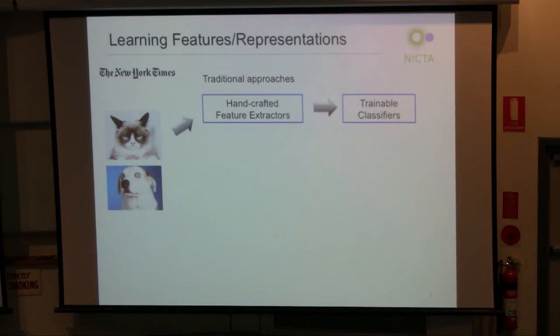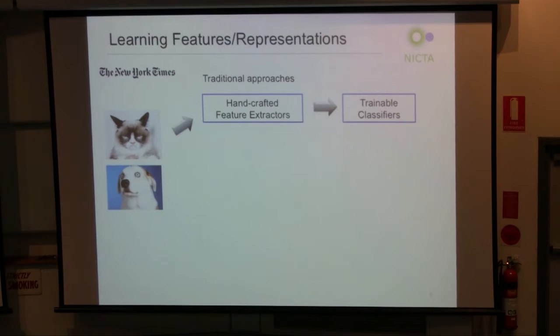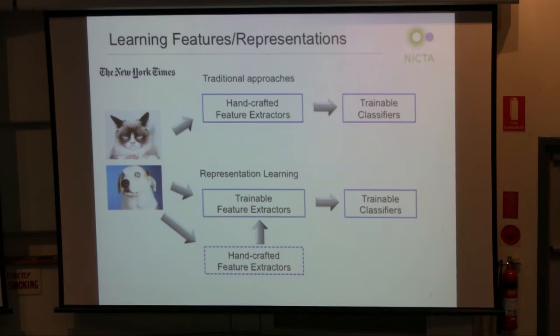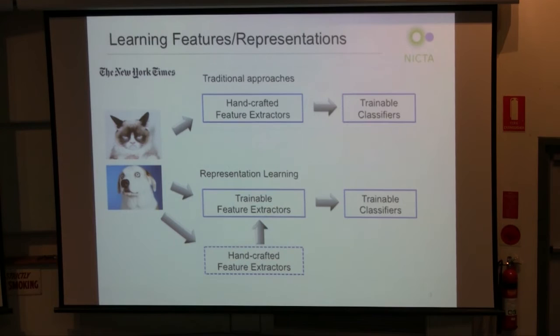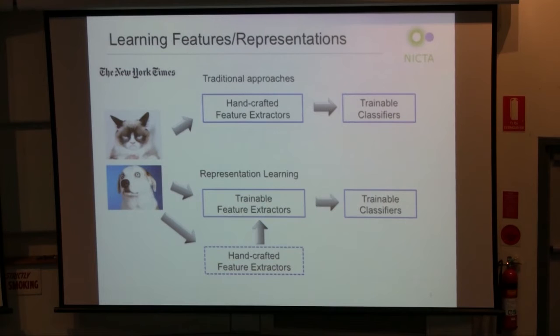What's the problem with that? In the big data era, data is large and complex. In many cases it's totally impossible to describe the data with a purely linear classifier — you simply cannot draw a line between two completely different sets of data points. This phenomenon is called underfitting. That's why people came up with the idea of representation learning.